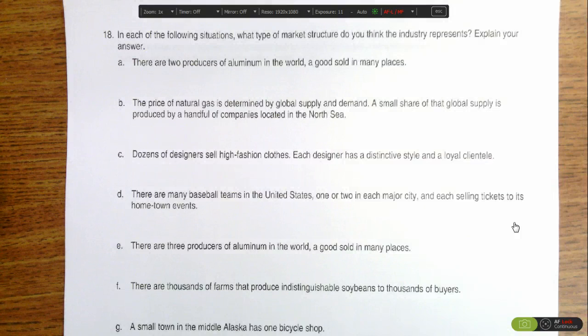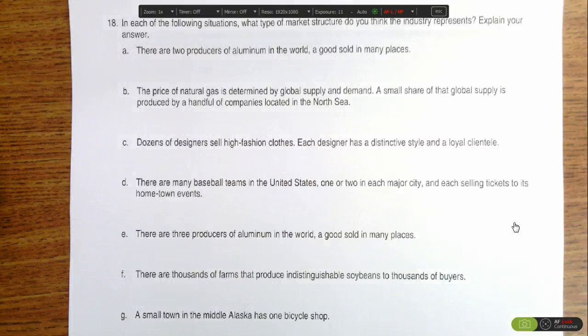Part D, there are many baseball teams in the United States. Each city has one or two, each selling its own tickets. Because there are one or two in each city, if there's more than one, they're not a monopoly. But there's clearly not competition in each city for baseball teams, and so they would be an oligopoly.